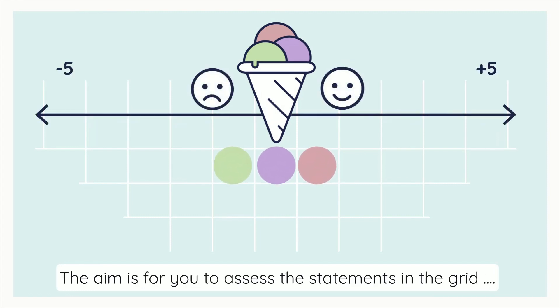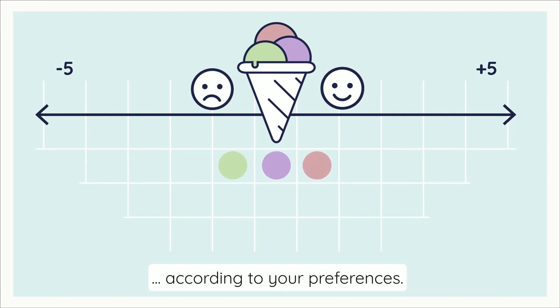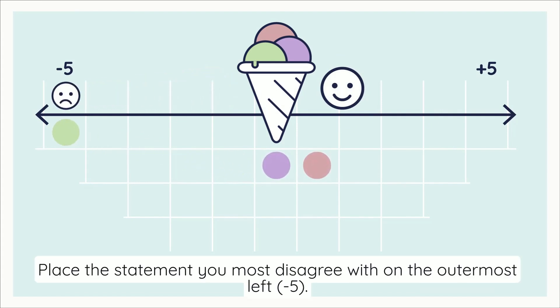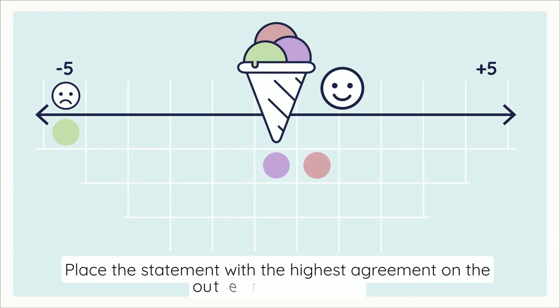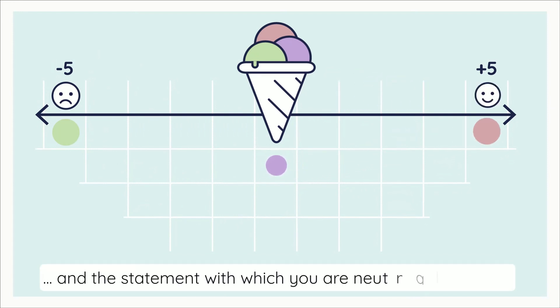The aim is for you to assess the statements in the grid according to your preferences. Place the statement you most disagree with on the outermost left, place the statement with the highest agreement on the outermost right, and the statement with which you are neutral in the center.